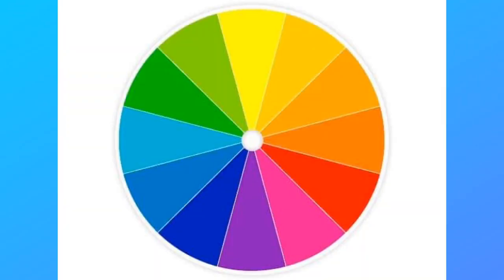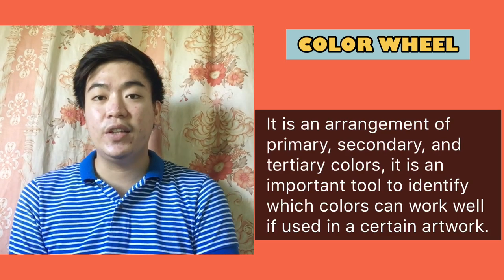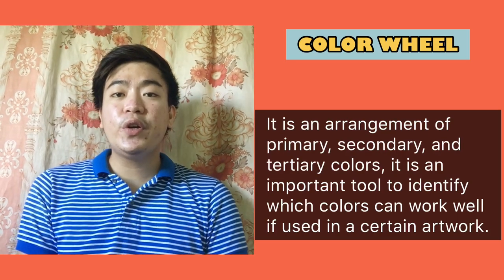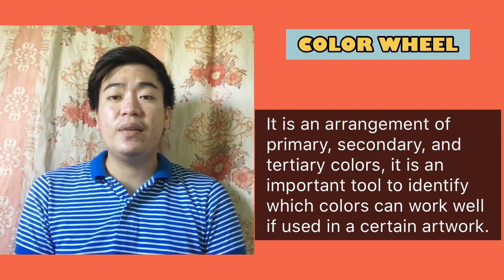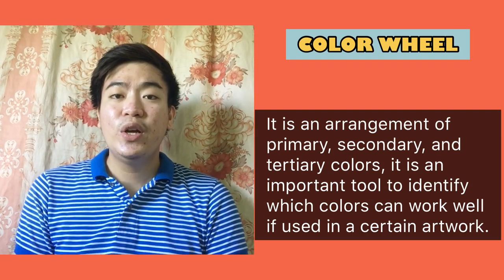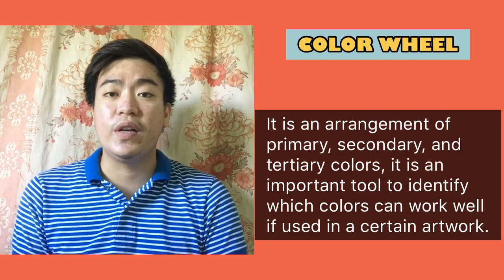Now let's take a look at the color wheel. The color wheel is an arrangement of primary, secondary, and tertiary colors. It is important to know and familiarize yourself with the color wheel because it is a tool to identify what colors can work well in a specific artwork. Those sets of colors are referred to as color schemes or color relationships.